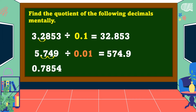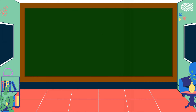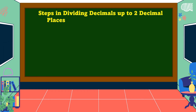Another example: seven-hundred-fifty-four ten-thousandths divided by one-thousandth. In dividing decimals by one-thousandth, move the decimal point three decimal places going to the right, and the answer is equal to seven hundred fifty-four and no tenths.